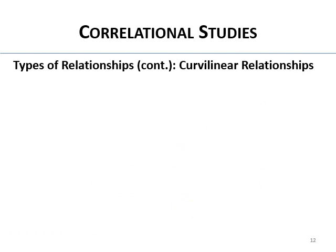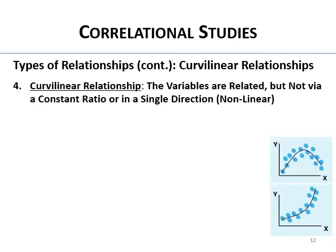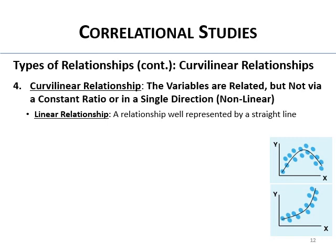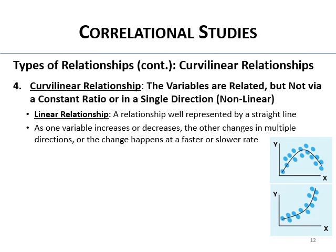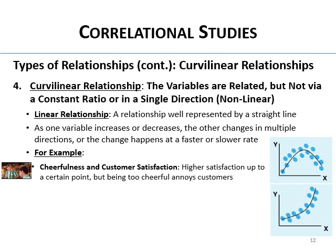One other type of relationship is the curvilinear relationship. In curvilinear relationships, the variables are related but not by a constant ratio or in a single direction — a straight line doesn't do a good job of representing the relationship. In linear relationships, the relationship is well represented by a straight line. In curvilinear ones, the relationship bends or changes direction.